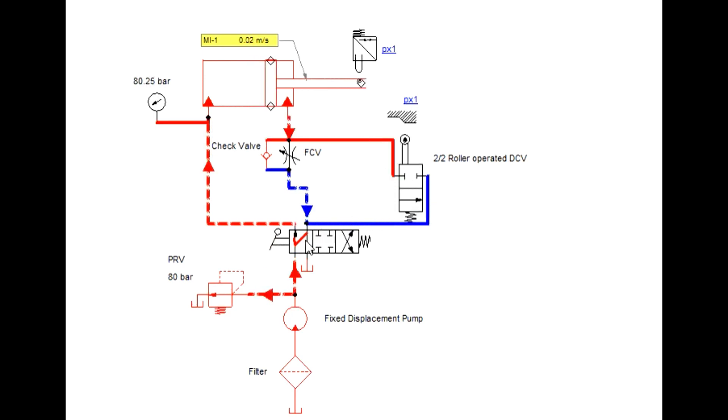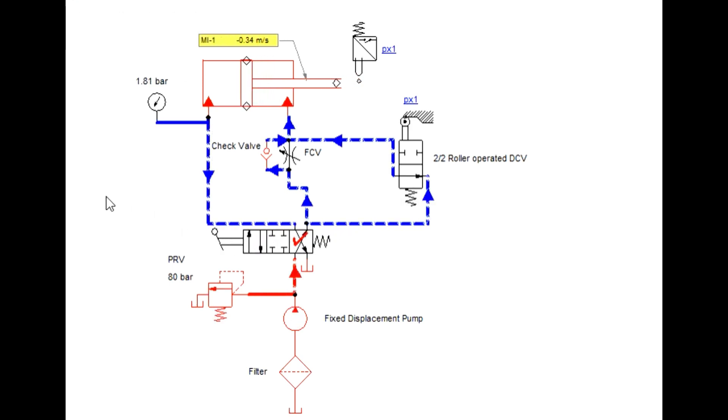Let us see animation once again in slow motion. See here now tool approaches this mechanical switch. Mechanical switch gets pressed which actuates the roller operated DCV which will close the path for fluid which is coming out of the actuator.